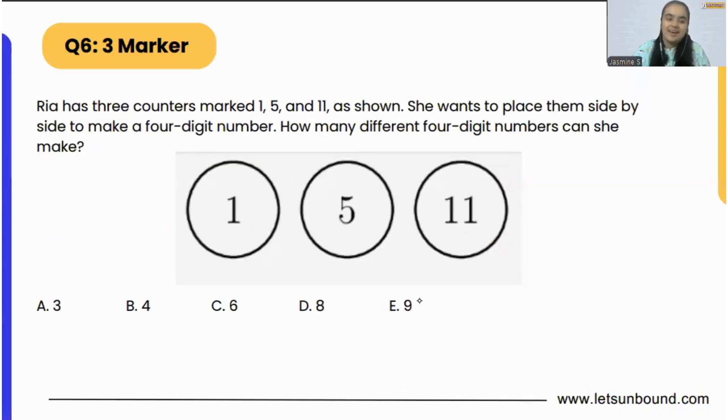Ria has three counters marked 1, 5, and 11 as shown in the figure below. She wants to place them side by side to make a four-digit number. How many different four-digit numbers can she make? We have to be very careful here.